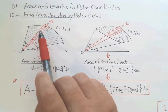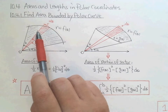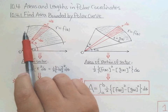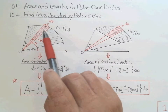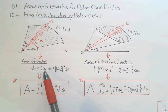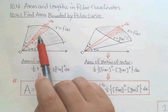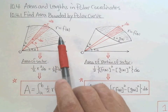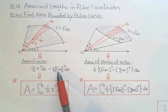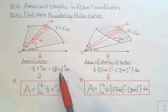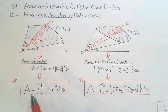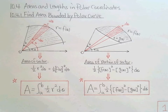All we need to do is find the area of the small sector and then integrate all of them. The area of the sector is one half times radius squared, r² times dθ, where dθ is the angle for this small sector. What is r? r equals f(θ). So one half times f(θ) squared times dθ. This is the small piece of area, and all we need to do to find the total area is to integrate this from A to B.